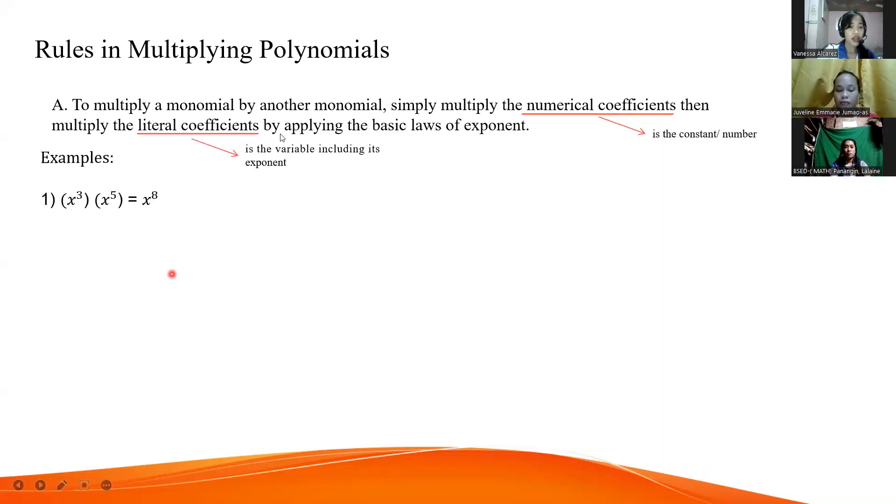For example, the quantity x to the power of 3 multiplied by x to the power of 5 equals x to the power of 8. In the basic laws of exponent, simply multiply the base and add the exponent. Very good.